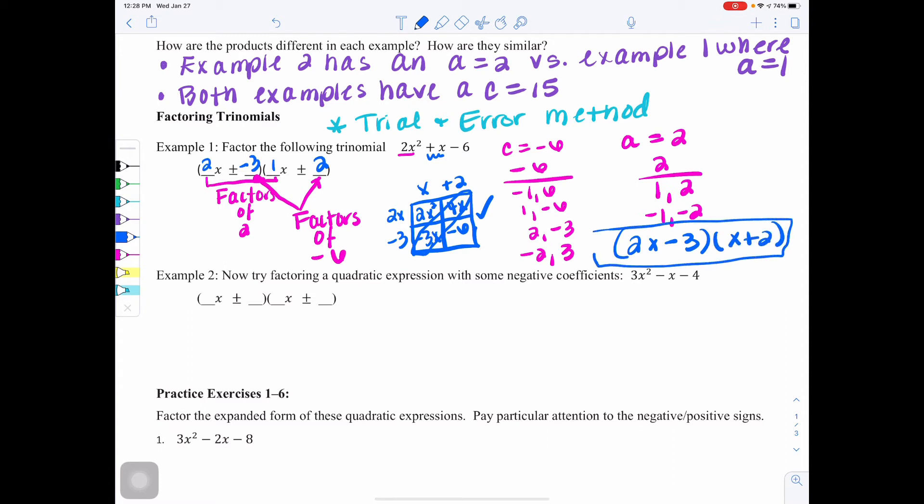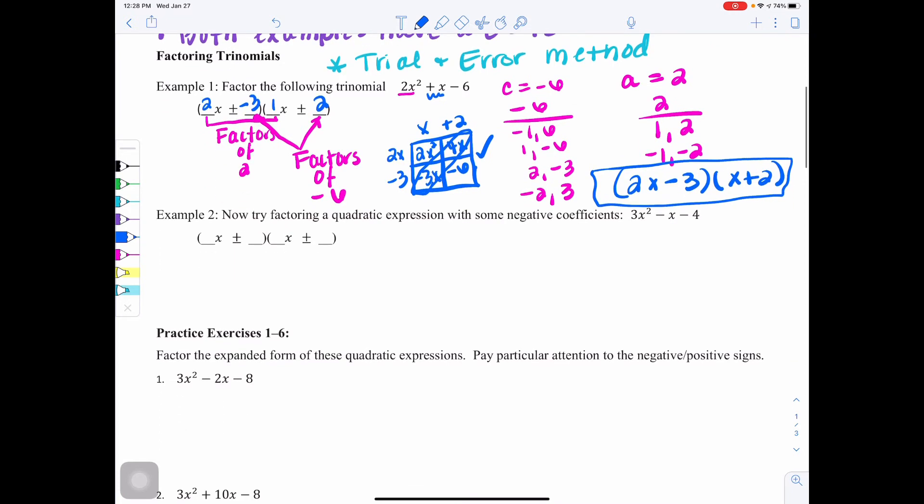So I hope you can see with that example what I mean by trial and error. Let's look at another example in example 2. We're going to try factoring a quadratic expression with some negative coefficients. So this time we've put some negatives in.